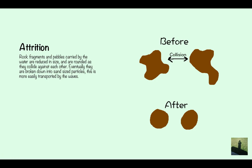Attrition. The way that I remember this one as compared to erosion is that the rocks are heading towards each other, so they're heading at each other, so it's attrition. This is where rock fragments and pebbles powered by the water are reduced in size and rounded as they collide off each other. Eventually they're broken down into sand sized particles. This is more easily transported by the waves. Here we've got the rough rocks colliding into each other and then afterwards they're much smaller and much rounder.